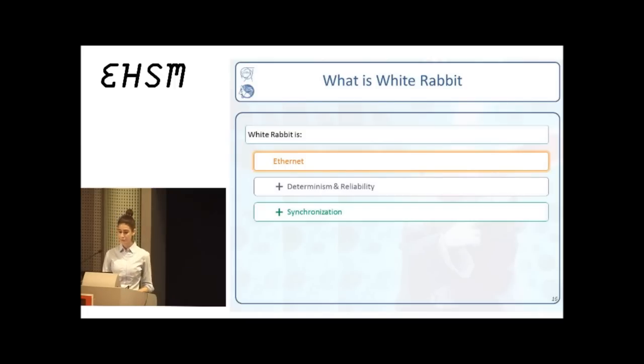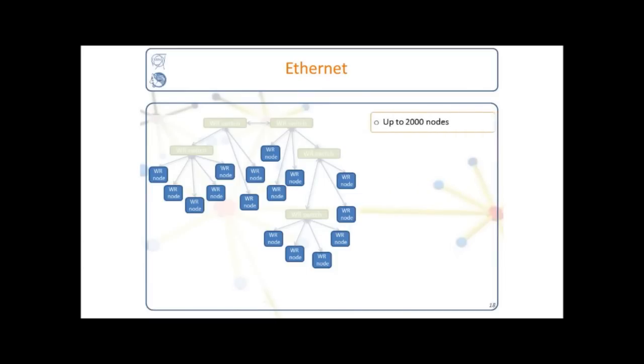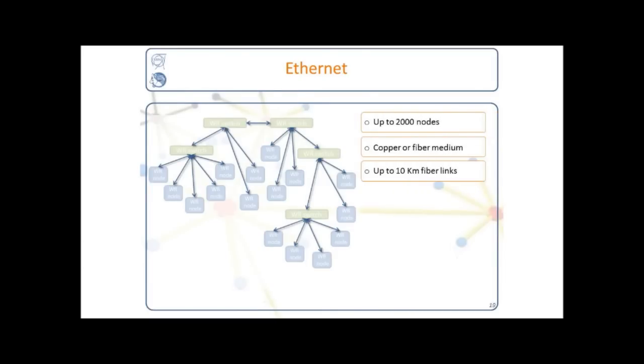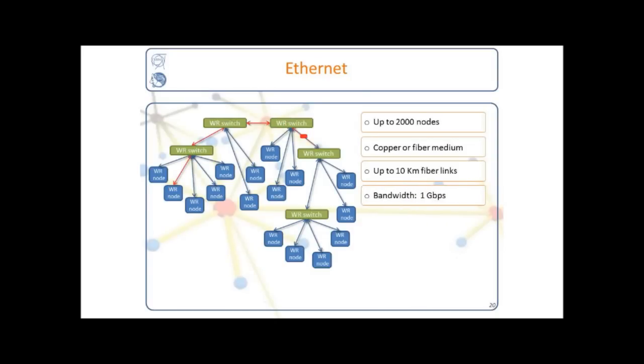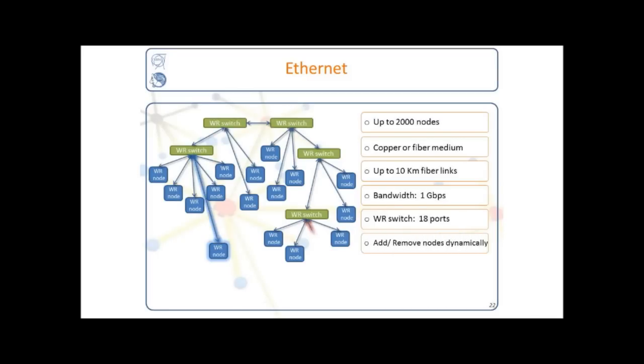Let's start with the Ethernet part. Here's an image of a White Rabbit network. There are White Rabbit nodes and White Rabbit switches. There can be up to 2,000 nodes. The physical medium can be copper or fiber, and the distance between two network devices is up to 10 kilometers. The bandwidth of the communication is 1 gigabit per second. Current version of the switch offers 18 ports. The network offers minimal reconfiguration effort, and the addition and removal of nodes can take place dynamically. Also, White Rabbit is compatible with Ethernet standard and supports the integration of non-White Rabbit switches and nodes. Finally, the switches support features and protocols of any middle range price Ethernet switch.